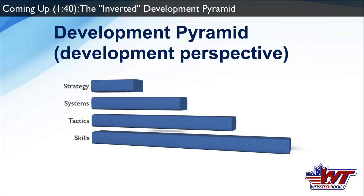I'm sure you've seen this, or some version of it — you've got skills at the bottom. Everything revolves around skills: if you can't skate, shoot, pass, or be in the right position for a system, you can't break out. So obviously we start with skills first from the developmental perspective. Next is tactics — if you can't pivot, you're never going to execute tactical things like gap control or read-and-react timing. Skills development comes first, then you build tactics on top of skills.